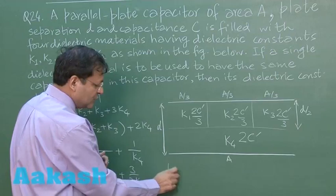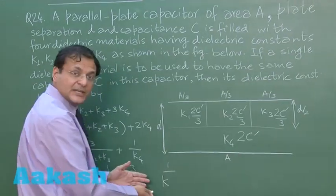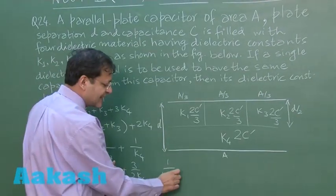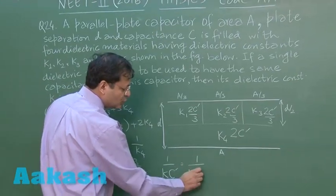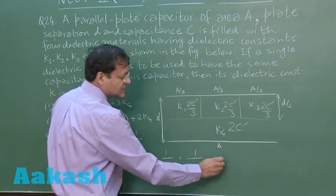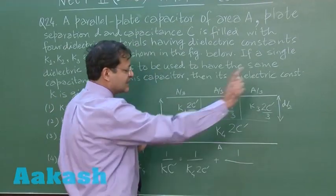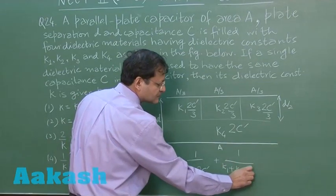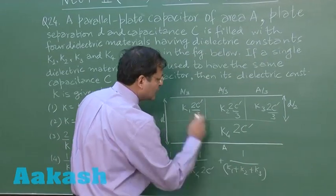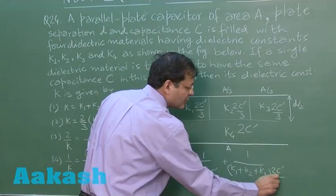Now these three capacitors will be treated in parallel and together they will be treated in series with this. So if you do that, you will be writing 1 by K equivalent, which you have to calculate, into C dash. This will be 1 upon K4 into 2C dash, plus 1 upon together these three in parallel. So this is K1 plus K2 plus K3 into 2C dash upon 3.